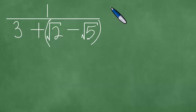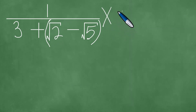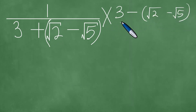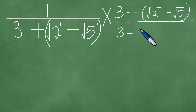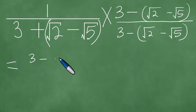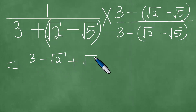We rationalize the denominator by multiplying by the conjugate, and the conjugate is 3 minus into the square root of 2 minus the square root of 5. You proceed to divide by 3 minus the square root of 2 minus the square root of 5. If you distribute, then you have minus the square root of 2 plus the square root of 5.